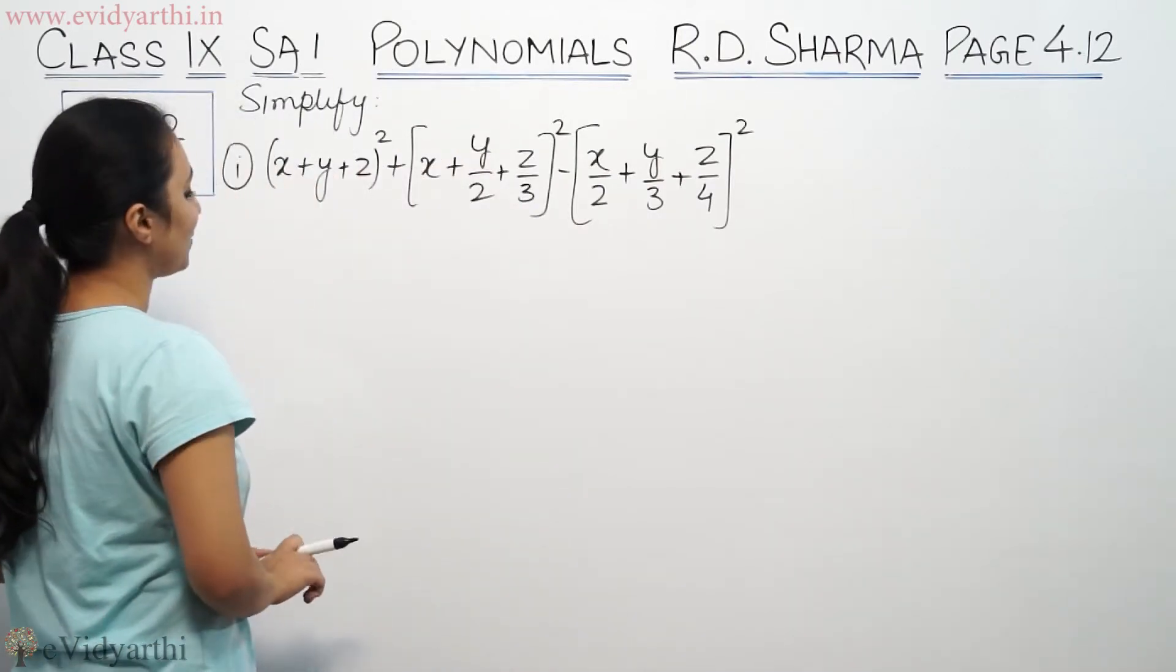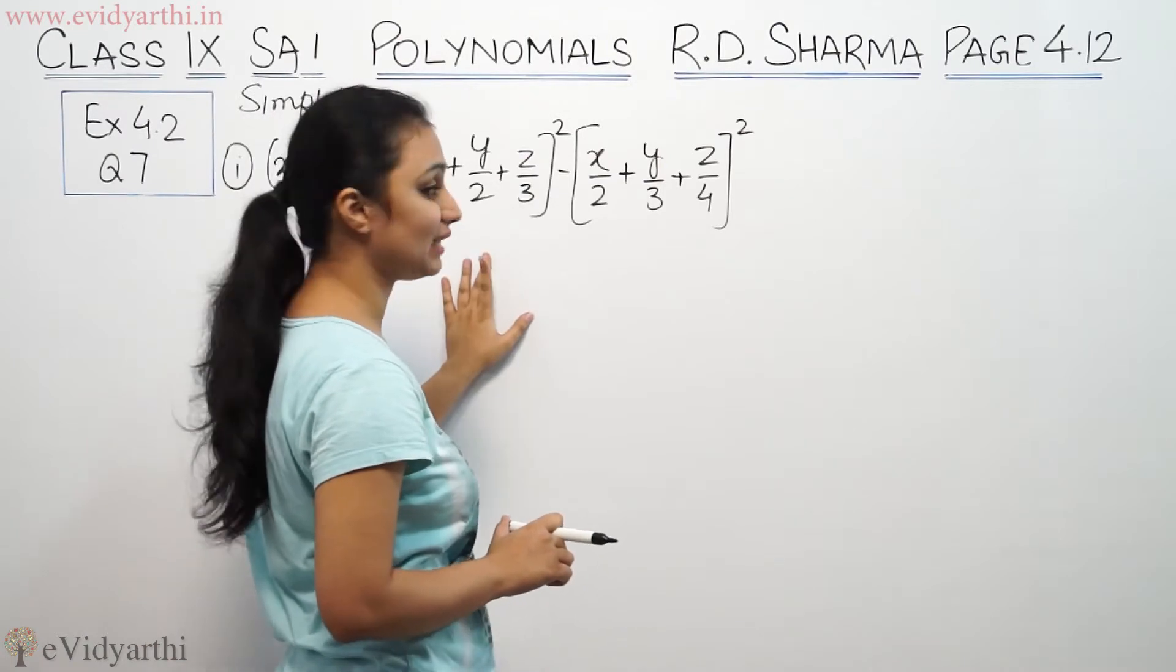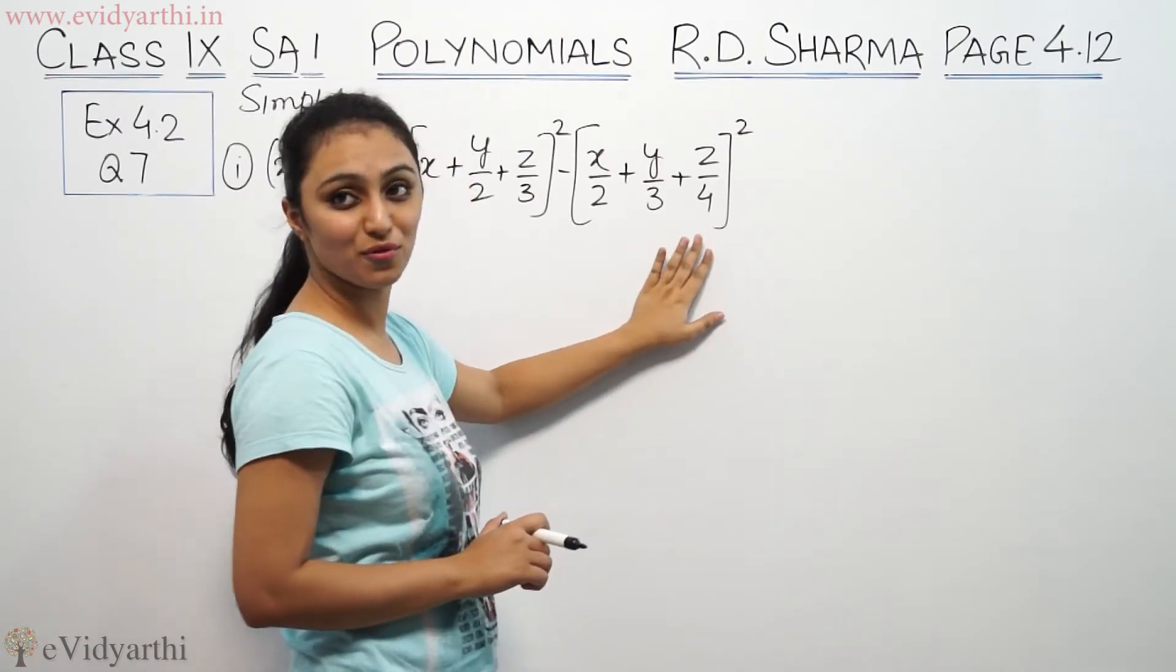It says simplify (x+y+z)² plus (x+y/2+z/3)² minus (x/2+y/3+z/4)².